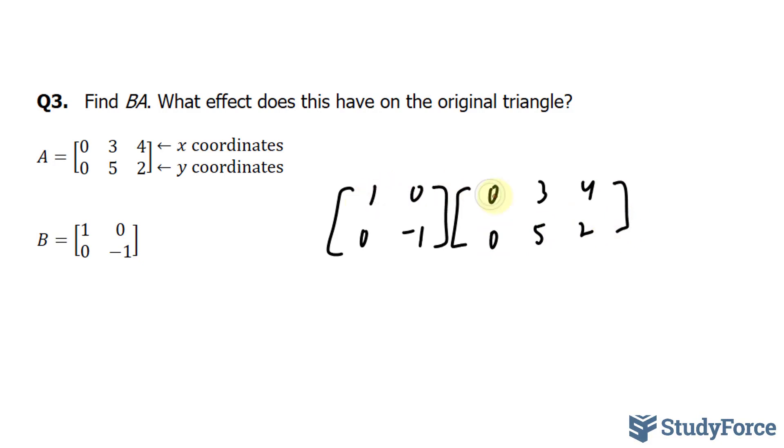What I'll do is multiply this 1 by this 0 and this 0 by 0. 1 times 0 is 0, plus 0. That gives us our new element, which is 0. 1 times 3 plus 0 times 5, that's 3. 1 times 4 plus 0 times 2 is 4. We just found all the x-coordinates.